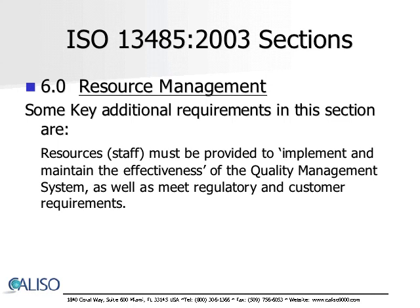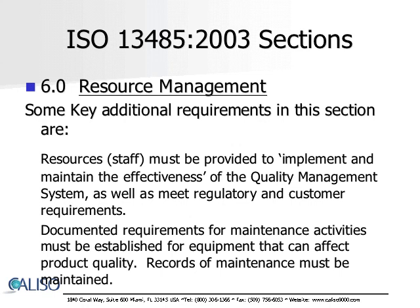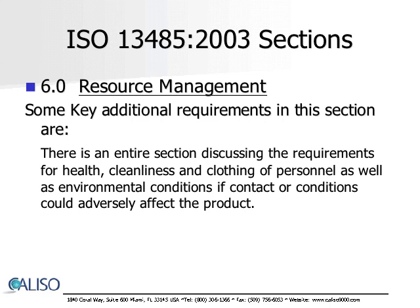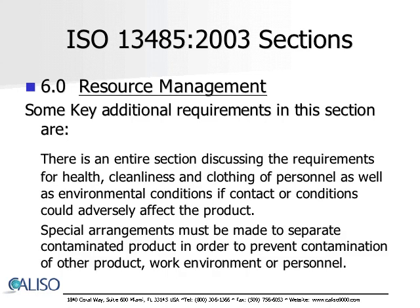Some key additional requirements found in this section: resources or staff must be provided to implement and maintain the effectiveness of the quality management system as well as meet regulatory and customer requirements. Documented requirements for maintenance activities must be established for equipment that can affect product quality, and records of maintenance must be maintained. There is an entire section discussing requirements for health, cleanliness, and clothing of personnel as well as environmental conditions if contact or conditions could adversely affect the product. Also, special arrangements must be made to separate contaminated product in order to prevent contamination of other product, work environment, or personnel.